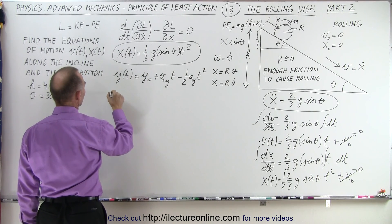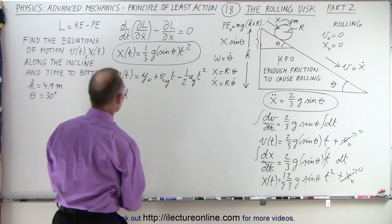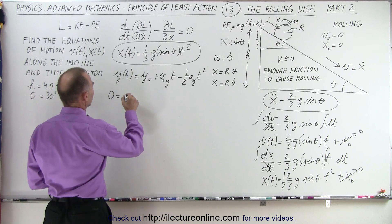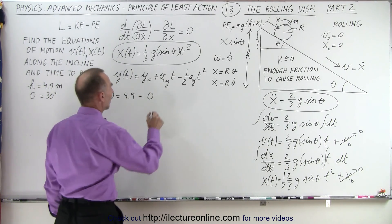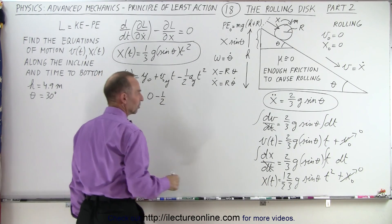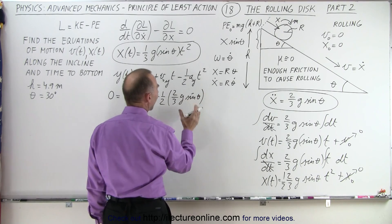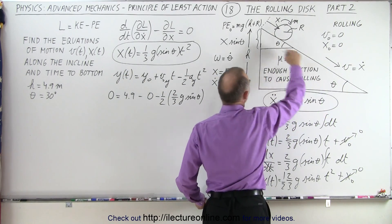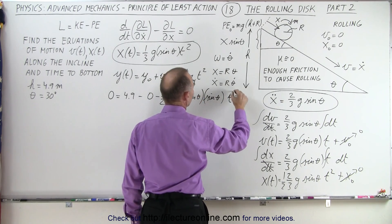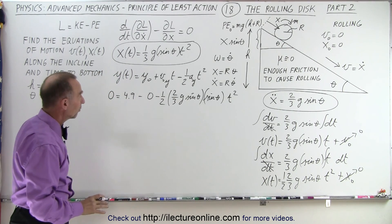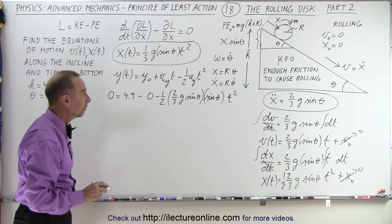The final height at the bottom is zero, equal to the initial height h = 4.9. The initial velocity in the y direction is zero. So: 0 = 4.9 minus 1/2 times the acceleration in the y direction, which is 2/3 g sine theta times sine theta times t squared. This equation tells us how long it takes to reach the bottom, since the final height is set to zero.